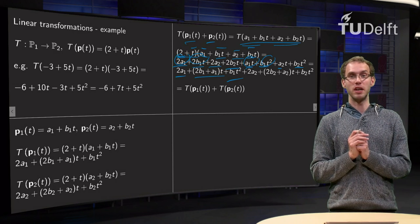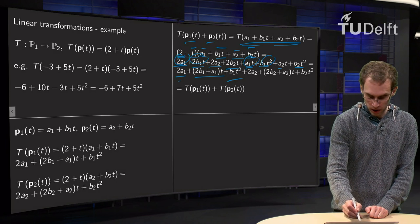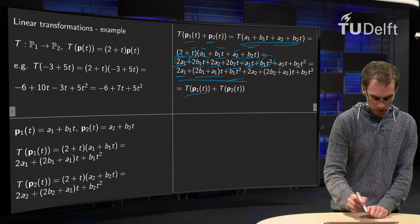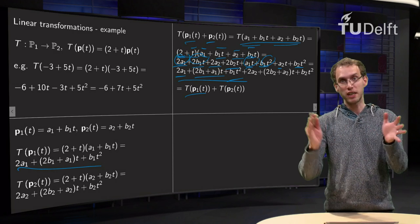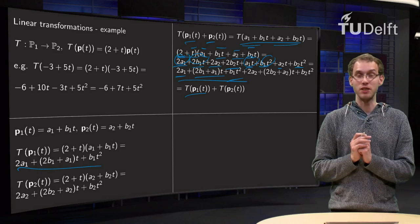We do the same with the term with the twos and then we see, hey, but this term here is just the T of P1 which is over here and the second part is the T of P2. So that property is satisfied.